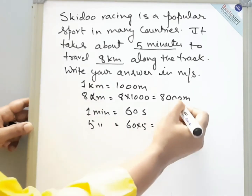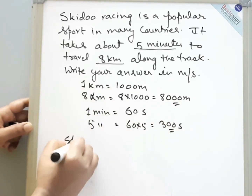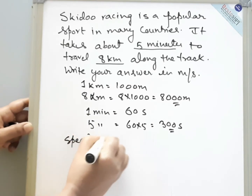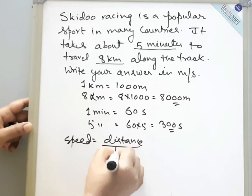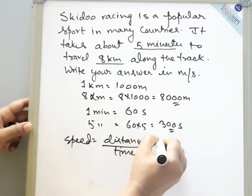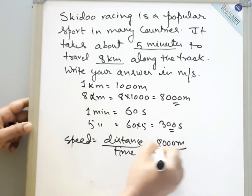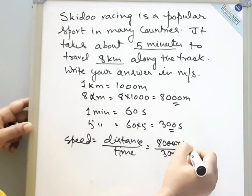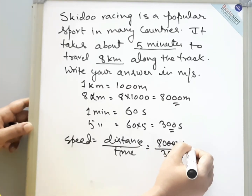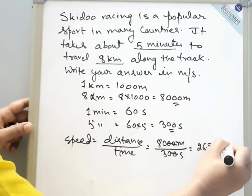Now we are going to use these values in the formula. Speed is equal to distance by time. Our distance is 8000 meters and time is 300 seconds. So it will be 26.7 meters per second.